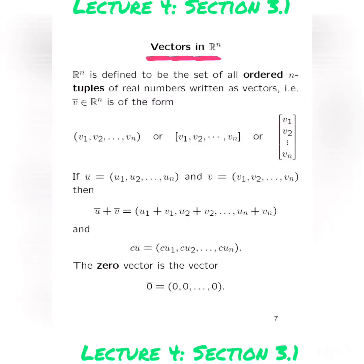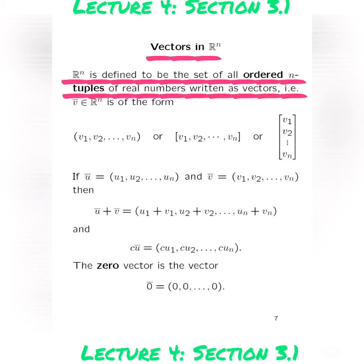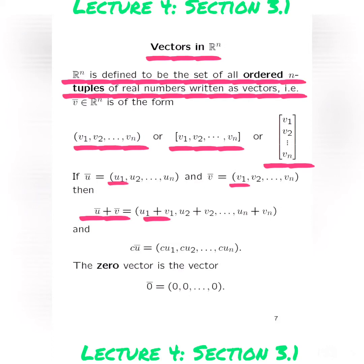Next we look at vectors in Rn. Rn is defined to be the set of ordered n-tuples of real numbers written as vectors, and it can be expressed in one of three forms: either as a coordinate point, a row vector, or a column vector. Adding vectors U and V in Rn is the same as adding them component-wise. Multiplying U with a scalar C in Rn is component-wise scalar multiplication. The zero vector is defined the same way as in R2 — each component is zero.